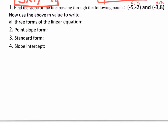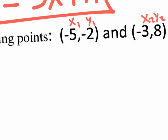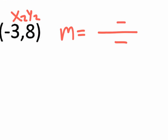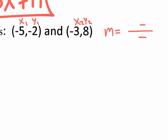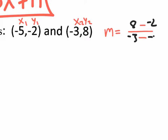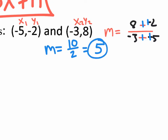Here we go. I've already labeled x1, y1, x2, y2. Using the slope formula: y2 is 8, y1 is negative 2, x2 is negative 3, and x1 is negative 5. We have plus plus and plus plus. Our slope works out to m equals 10 over 2, which is m equals 5.